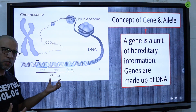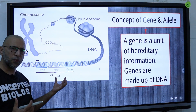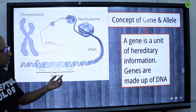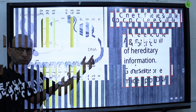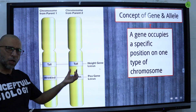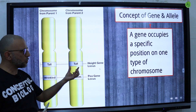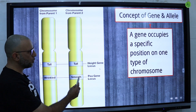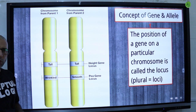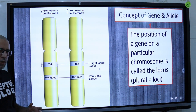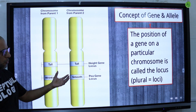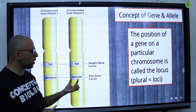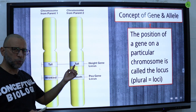A gene is a unit of hereditary information, and genes are made up of DNA. A gene occupies a specific position on one type of chromosome. The position of a gene on a particular chromosome is called the locus — locus is singular, loci is plural.